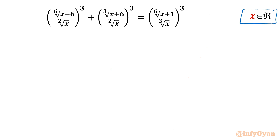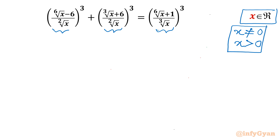Let's get started by writing the domain of the equation. In the denominator we have square root of x and cube root of x, so the denominator cannot be 0, meaning x cannot be 0. Also, since square root of x is involved, x cannot be negative for real solutions. So the overall conclusion is that x must always be positive — strictly nonzero positive.